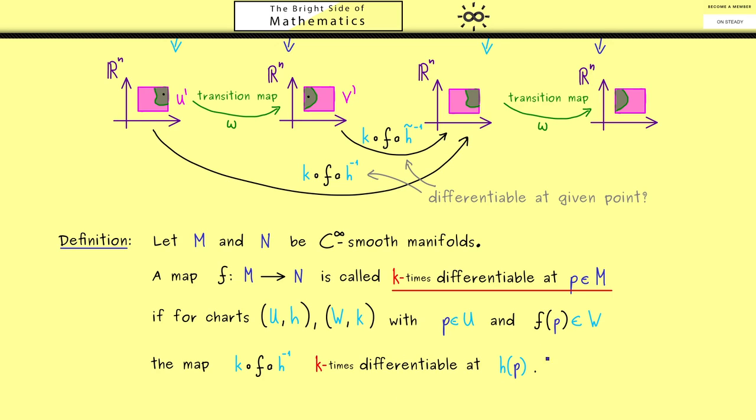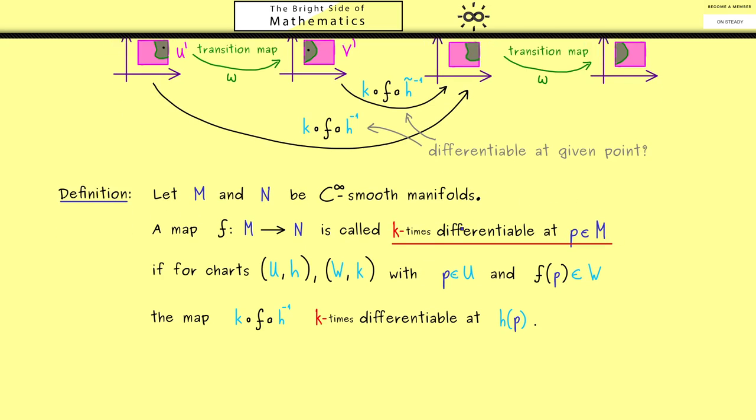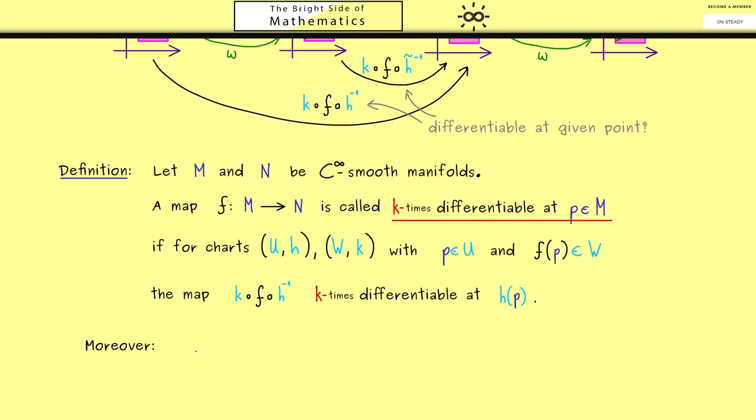Or in other words, if we have this, then we can call the abstract map f k-times differentiable at the point p in M. Okay, and now by our discussion above you already know if this works for two given charts here, it also works for all other possible combinations of charts. Moreover, you should also see we can stretch this definition to a plain k-times differentiable if it's k-times differentiable at all points p in M. And indeed, this will be the definition we use most of the time.